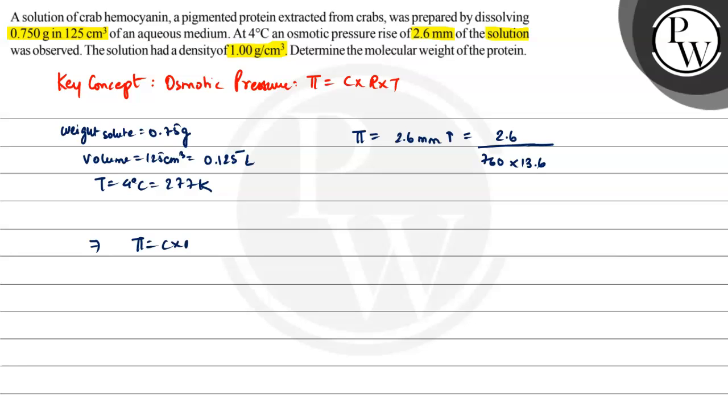Using π = CRT, where C is the number of moles of solute divided by volume. We can write C as weight of solute divided by molar mass, then divided by volume. So π = (weight/M) × (1/volume) × R × T. Rearranging, M is what we need to find.